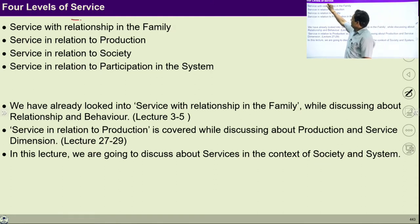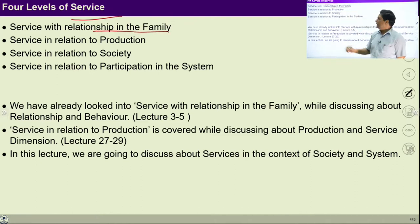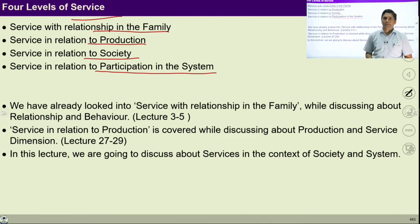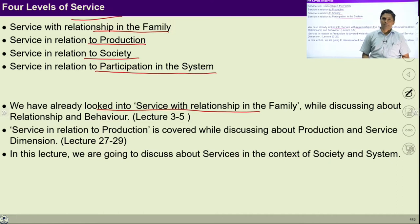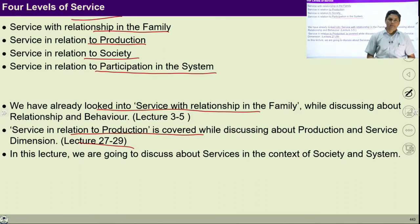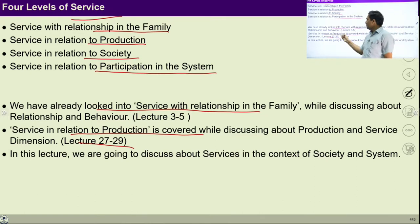If you see this service, we will discuss four levels of service: service with relationship in the family, service in relation to production, service in relation to society, and service in relation to participation in the system. All these four services we are going to discuss in this lecture. We have already looked into service with relationship when we studied relationship during lectures 3 and 5, and then we studied service in relation to production in lectures 27 to 29 but from a different perspective. Now we will have a brief discussion on these two keeping service in mind.